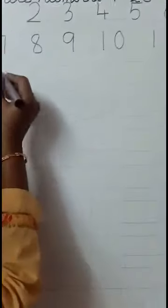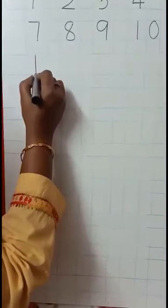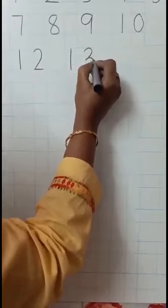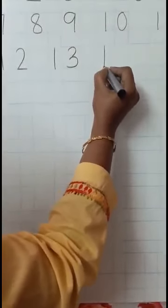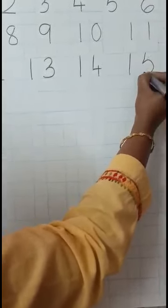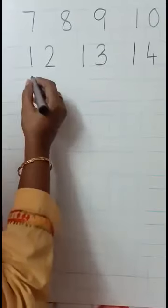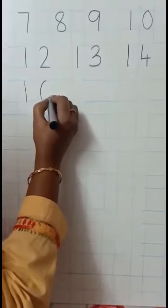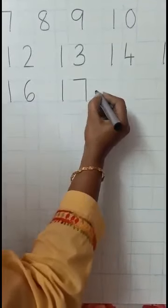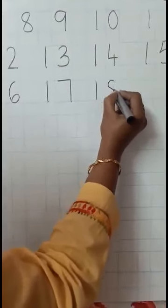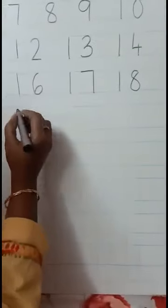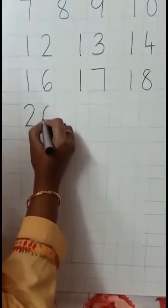1 number in 1 box. Same way come down. Leave 1 box: 1, 2 — 12. Leave 1 box: 1, 3 — 13. Leave 1 box: 1, 4 — 14. Leave 1 box: 1, 5 — 15. Again, come down. Leave boxes: 1, 6 — 16. Leave 1 box: 1, 7 — 17. Leave 1 box: 1, 8 — 18. Leave 1 box: 1, 9 — 19. Same way come down: 2, 0 — 20.